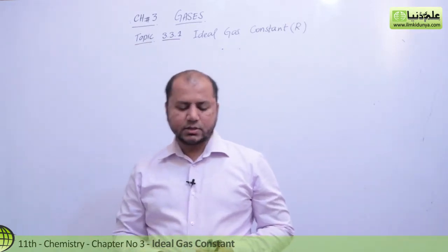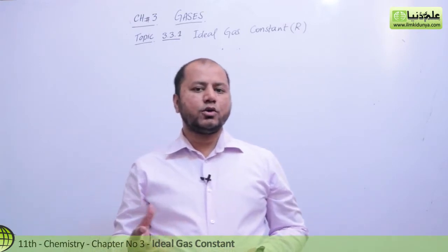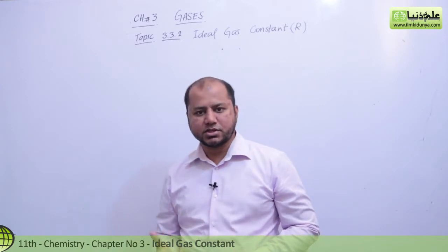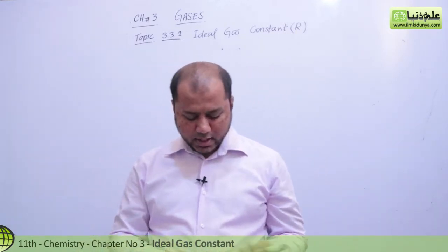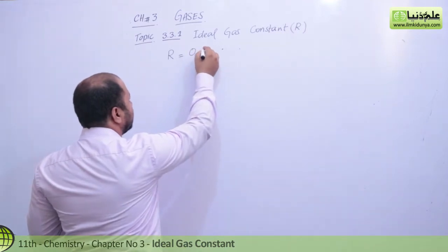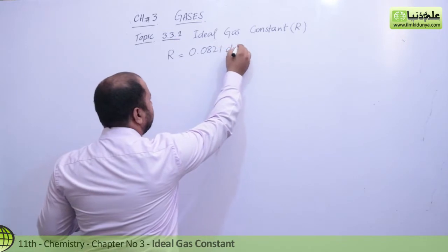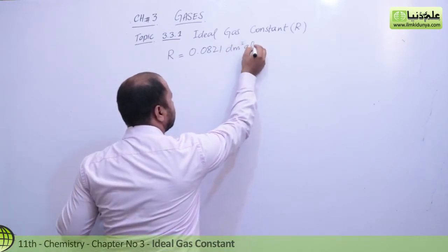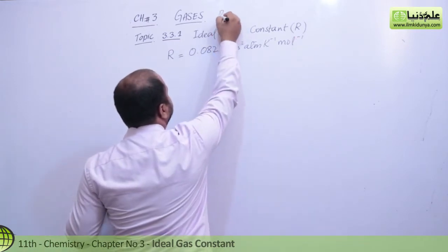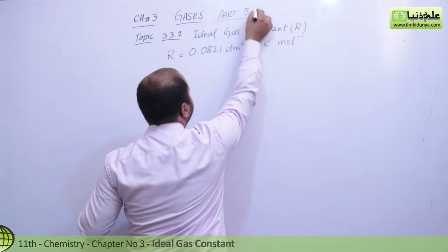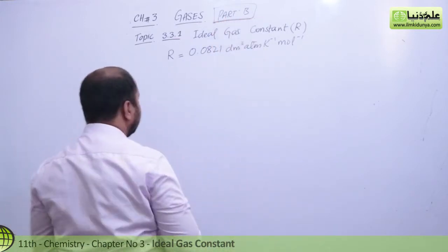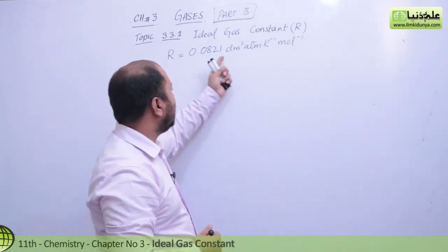In the first episode of my lecture, I showed you how to derive R using the units dm³·atm. In this Part B, I will show you derivation of R values with different units. We know that R is equal to 0.0821 dm³·atm per kelvin per mole — that is our known constant value.